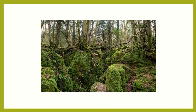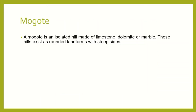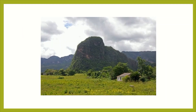Here is another feature — mogote. It is described as an isolated hill made of limestone, dolomite, and marble. These hills exist as rounded landforms with steep sides.